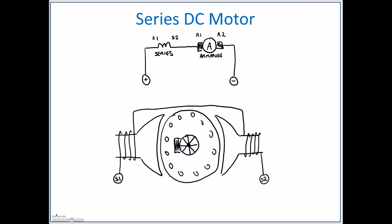We've got our brushes that sit on the commutator. Attached to those brushes are the conductors A1 - let me just make that a little bit bigger - A1, and on the other side we've got A2. A2 connects up to the other brush.